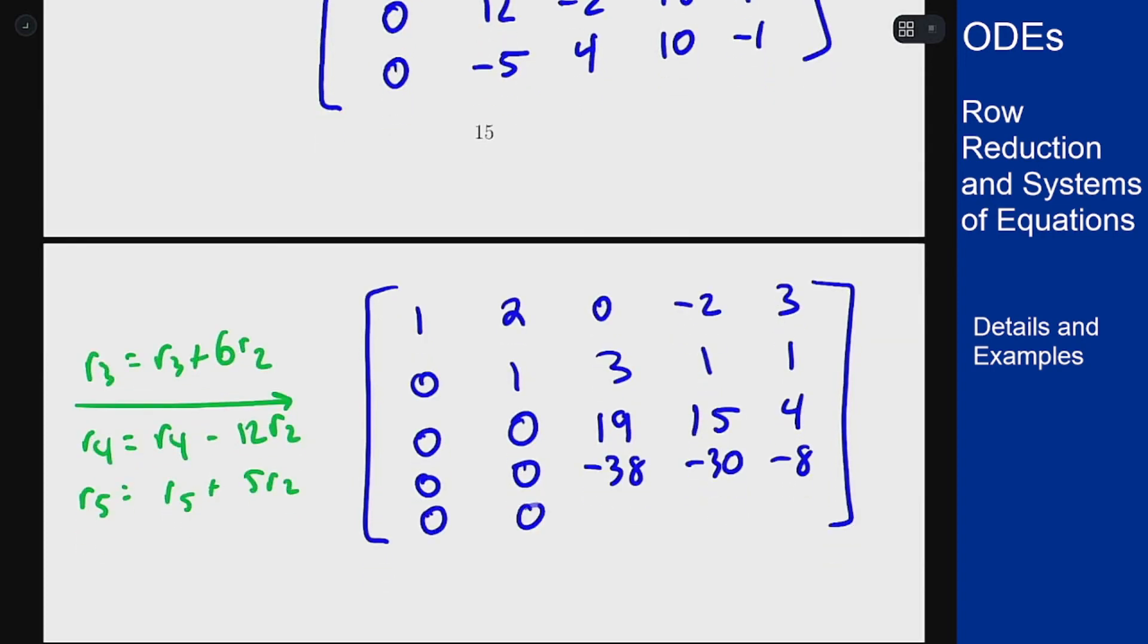0, 0 as expected. 4 plus 5 times 3 is 19. 10 plus 5 is 15. And negative 1 plus 5 is 4. So we're now at this point here.